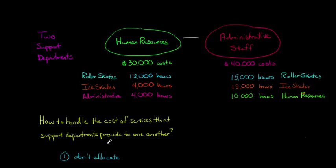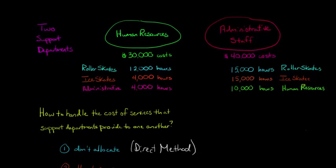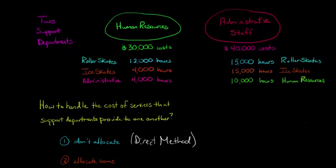That's the direct method, and many companies like it because it's the easiest approach. But what if we wanted to allocate some of these inter-support costs? To allocate some of them, we can use something called the step-down method, which is another popular approach.